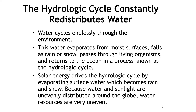Solar energy drives a cycle of water evaporation, transport, and precipitation. Both solar energy and water that can be evaporated are unevenly distributed around the globe. Consequently, water resources are unevenly distributed.